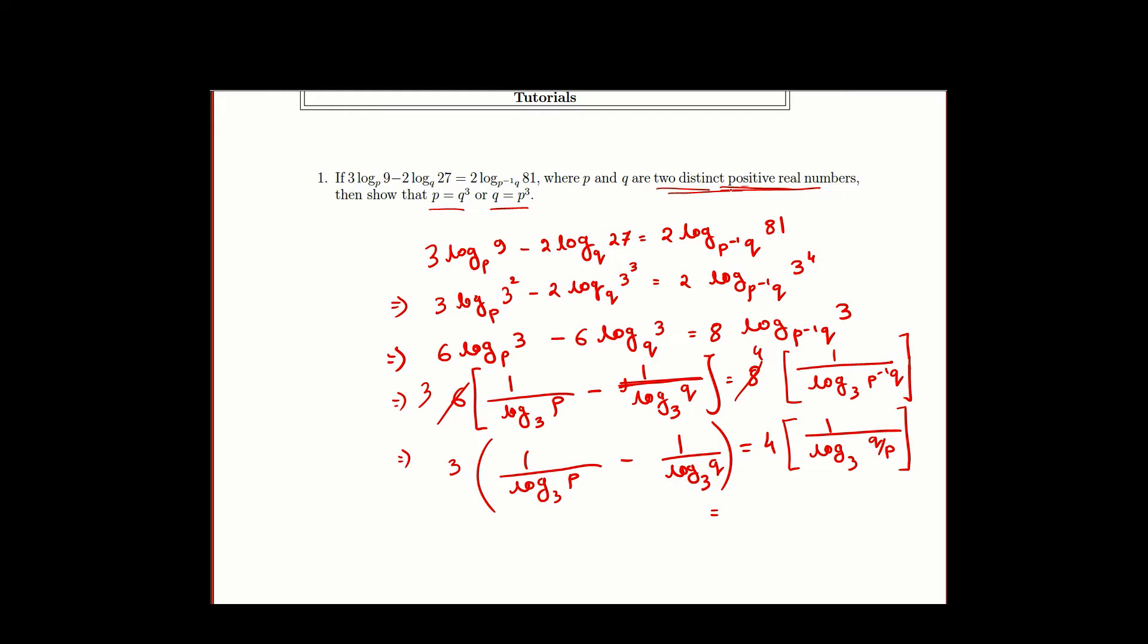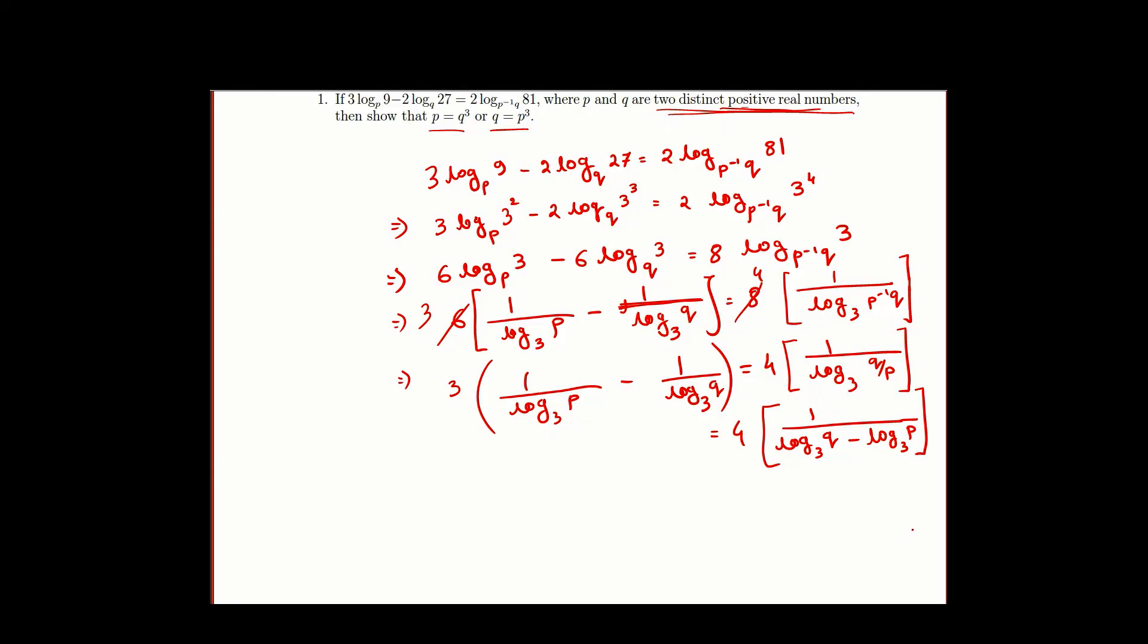We are taking two distinct positive real numbers, P and Q. So here it is 1 over (log_3(Q) minus log_3(P)). We have written every term in terms of log_3(P) or log_3(Q). Let us assume log_3(P) as M and log_3(Q) as N.